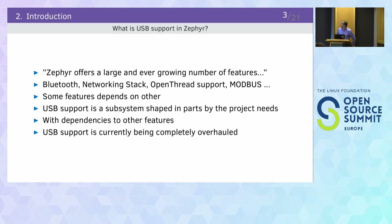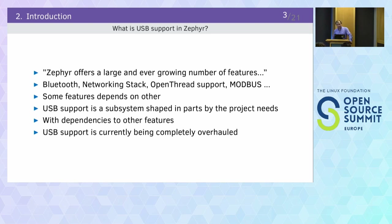On the Zephyr documentation page it says Zephyr offers a large and ever-growing number of features like Bluetooth, network stack, threads, mutexes, USB, and so on. Some features depend on others — for example, OpenThread depends on the network stack and parts of Bluetooth, like if you use the host-controller interface. A sample depends on your driver subsystem, and if you use that with USB, it obviously depends on USB. The thing is that USB support in Zephyr was not written from scratch for Zephyr's subsystem.